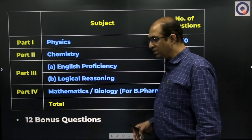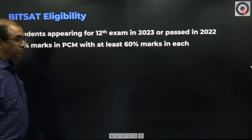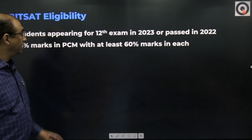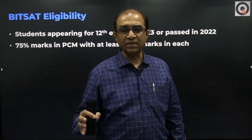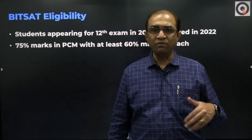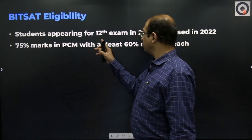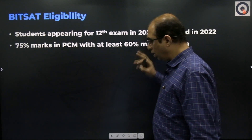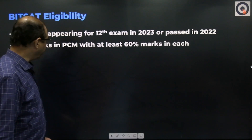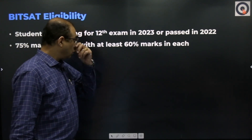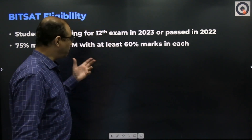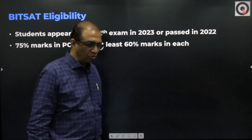Regarding eligibility: students appearing for 12th class exams in 2023, or those who passed in 2022, are eligible. Students who passed in 2021 are not eligible. The second criterion is that you should have 75% in aggregate across Physics, Chemistry, and Mathematics, with at least 60% in each subject individually. These are the only two eligibility criteria for BITSAT.